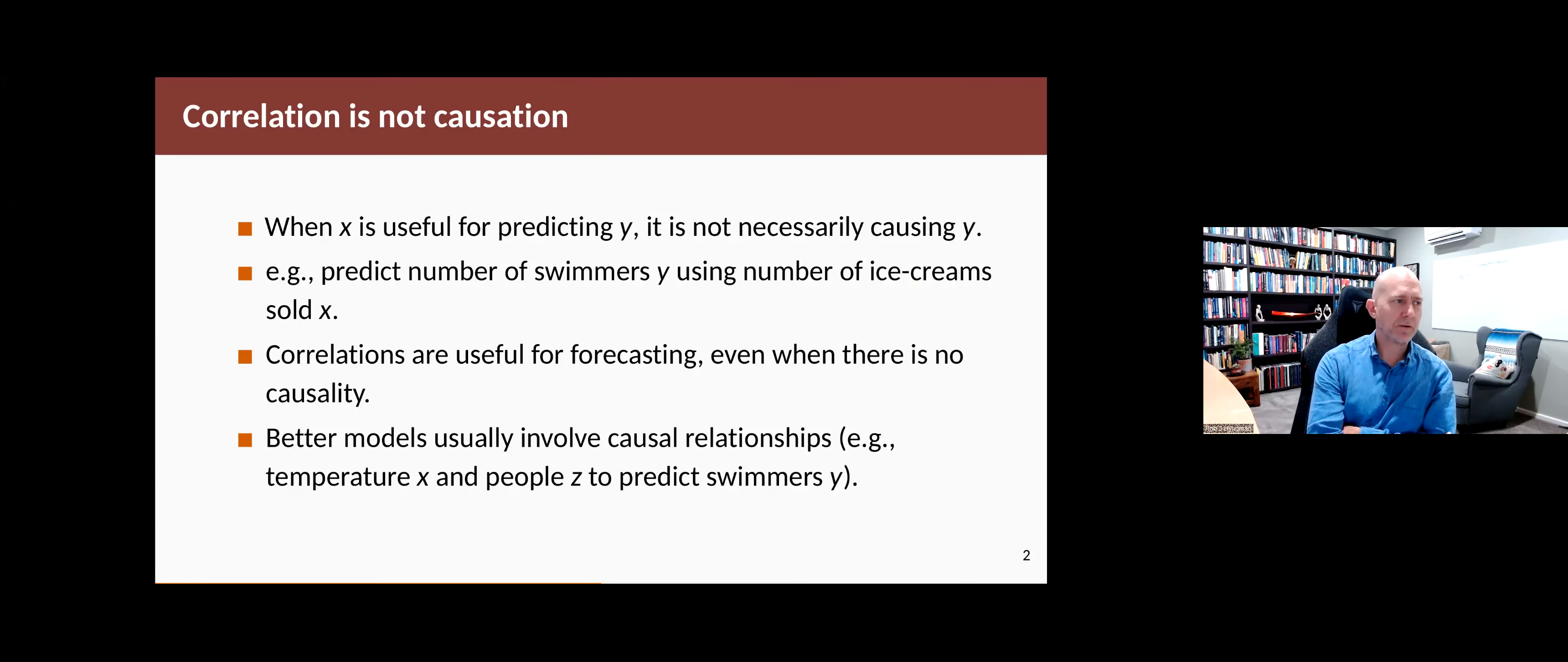Firstly, correlation is not causation, which is obviously true. Just because two things are correlated doesn't mean one's causing the other. And when you're doing a regression model for forecasting, it doesn't really matter much. Your predictor variable X may not be causing Y, but it can still be a good predictor. It can still be a useful model.